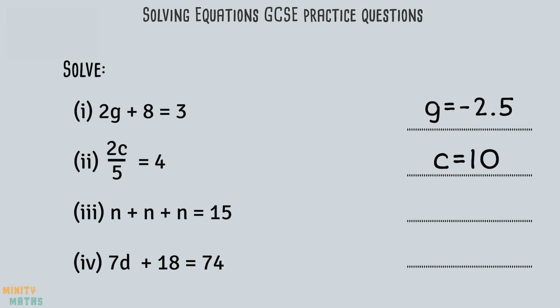Question 3 is a bit different. We are told if we add up 3 lots of n we get 15, so we need to simplify then solve. If 3n equals 15, then we can divide 15 by 3 to find out what 1n equals.